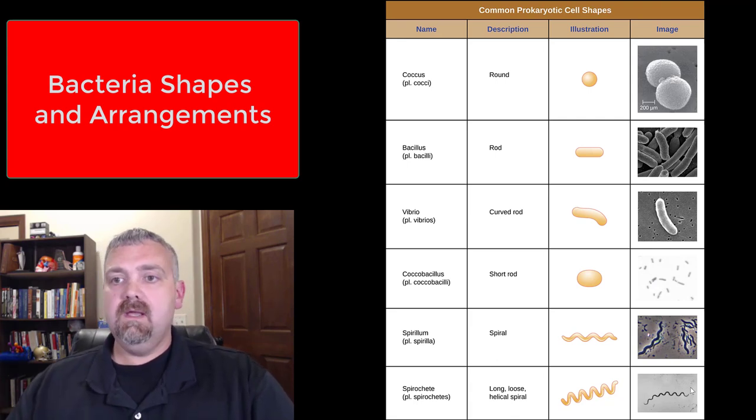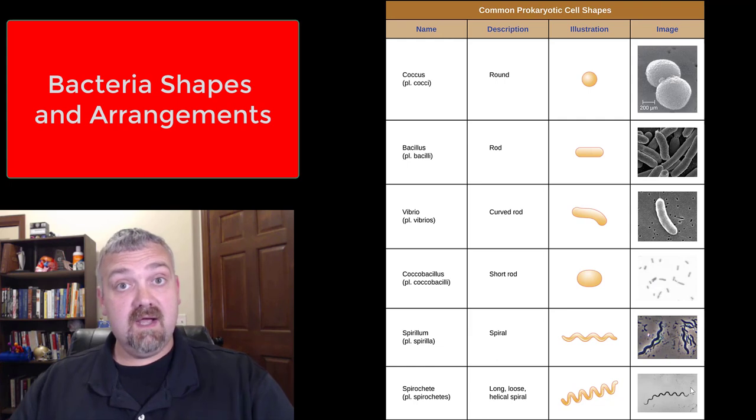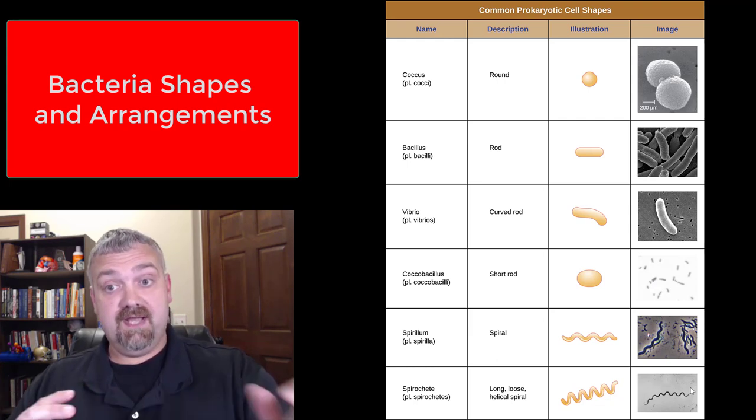So I'll just go right through the list here. First we have a coccus. A coccus would be the singular, cocci would be plural. That's going to be a round or a spherical cell.